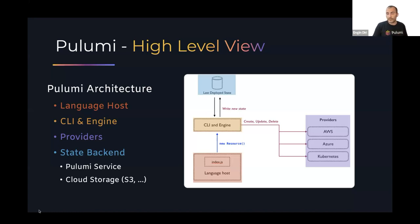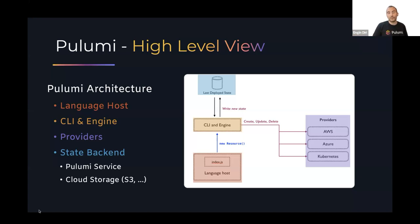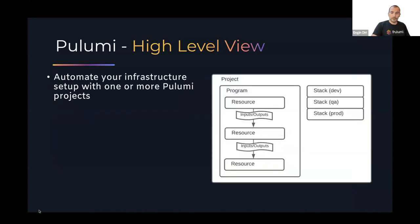For state management, you can use the Pulumi Cloud service or run it on your own — local, S3 bucket, Artifactory, you name it. If you run pulumi up a second time after a change, it checks the state, calls delete or update on the provider, waits for the result, and updates the state file accordingly, giving you feedback on which properties changed.